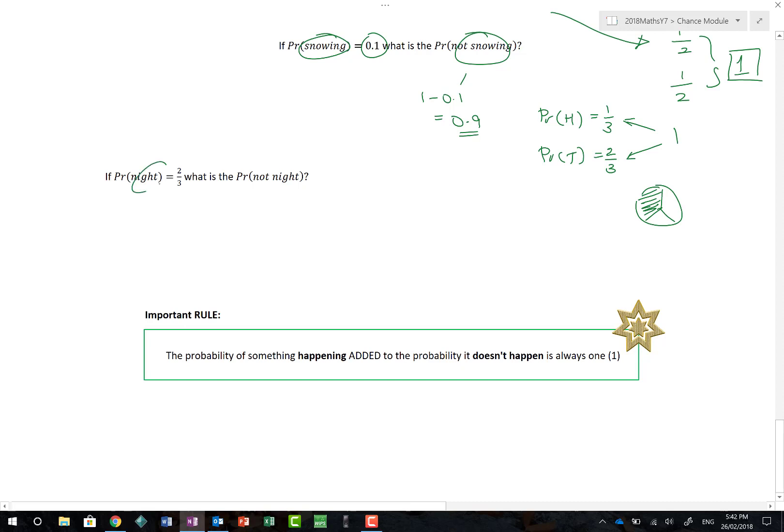The last one here is if it's knight, what is the probability it's not knight? And again, there's only two possible outcomes there. Knight and not knight. So if it's knight, it's two-thirds, then that must mean the probability that it's not knight, and again I'm going to put knight with a line above it, must be 1 out of 3. Why? Because two-thirds plus one-third is equal to one whole one. This is the important rule. The probability of something happening added to the probability it doesn't happen is always 1. We now know this.